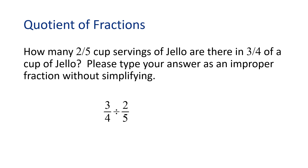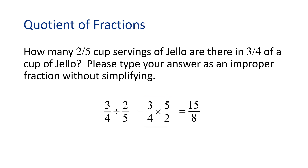Let's turn this into a multiplication problem. Remember, we will multiply by the reciprocal of the second fraction. So we change two-fifths into five-halves. Now we multiply straight across. Three times five is fifteen, and four times two is eight. So we have fifteen-eighths. This means there are fifteen-eighths of two-fifths cups of Jell-O in three-fourths of a cup of Jell-O.